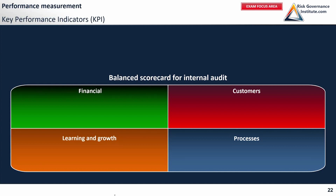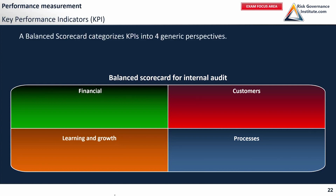Scorecard. I'm taking internal audit as an example because you should know it pretty well. A balanced scorecard categorizes key performance indicators into four generic perspectives. This was given by authors Kaplan et al. and others.